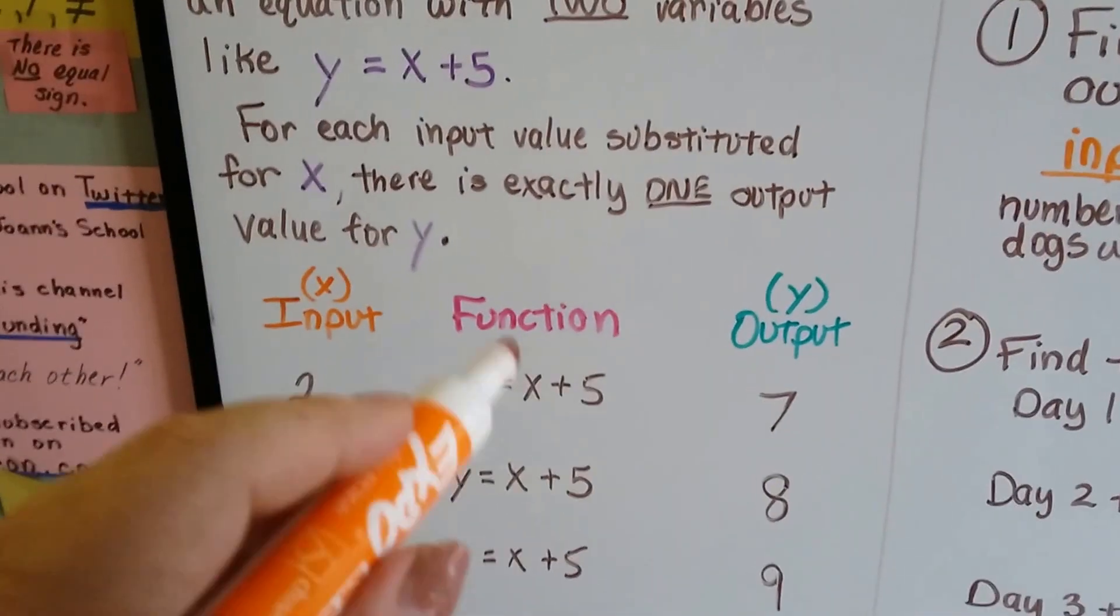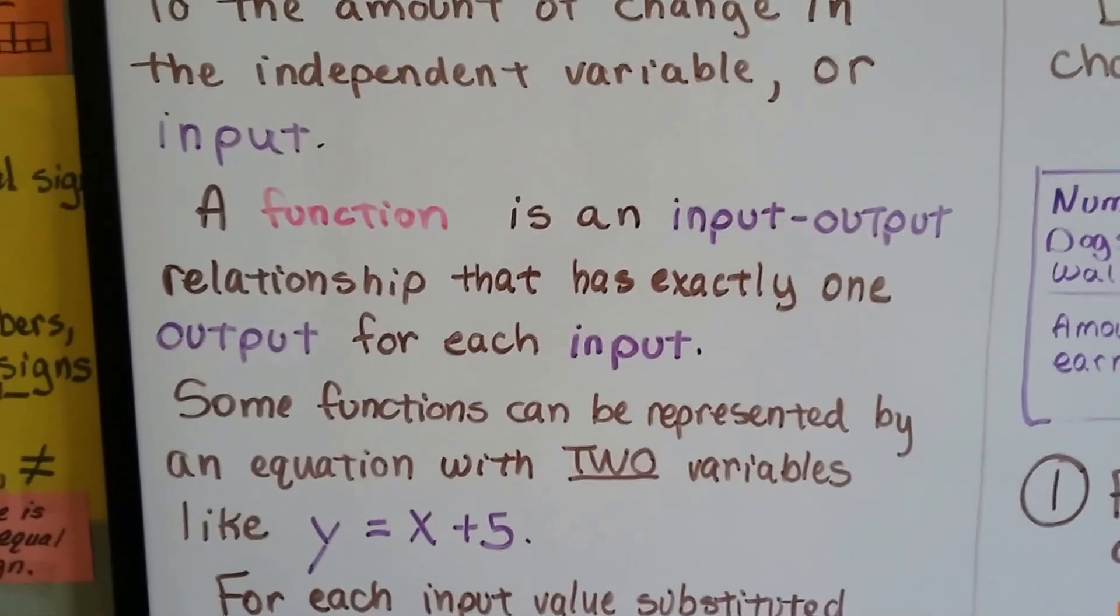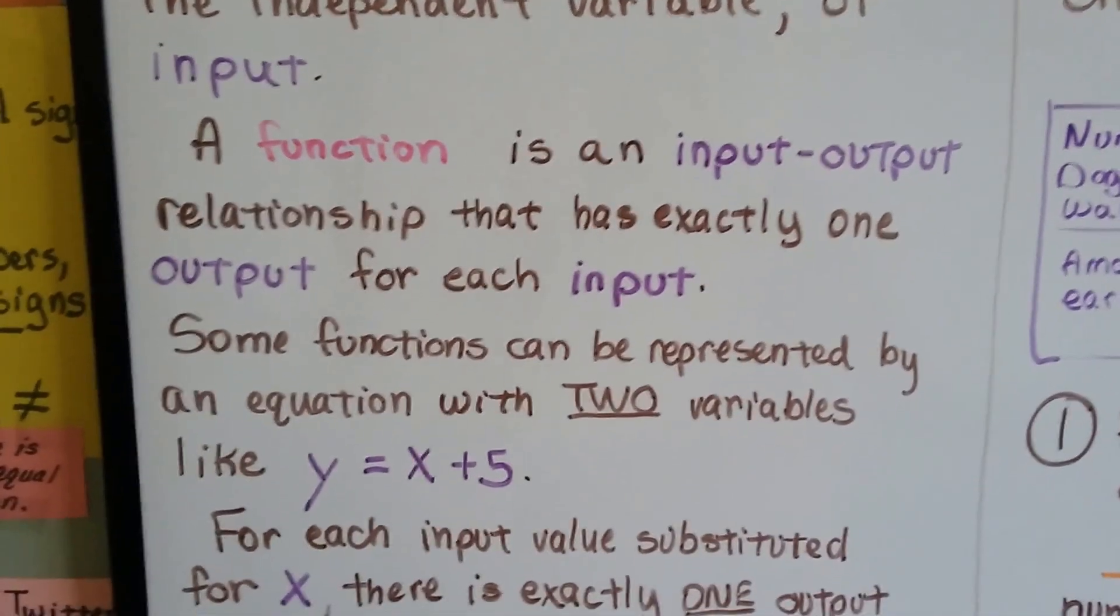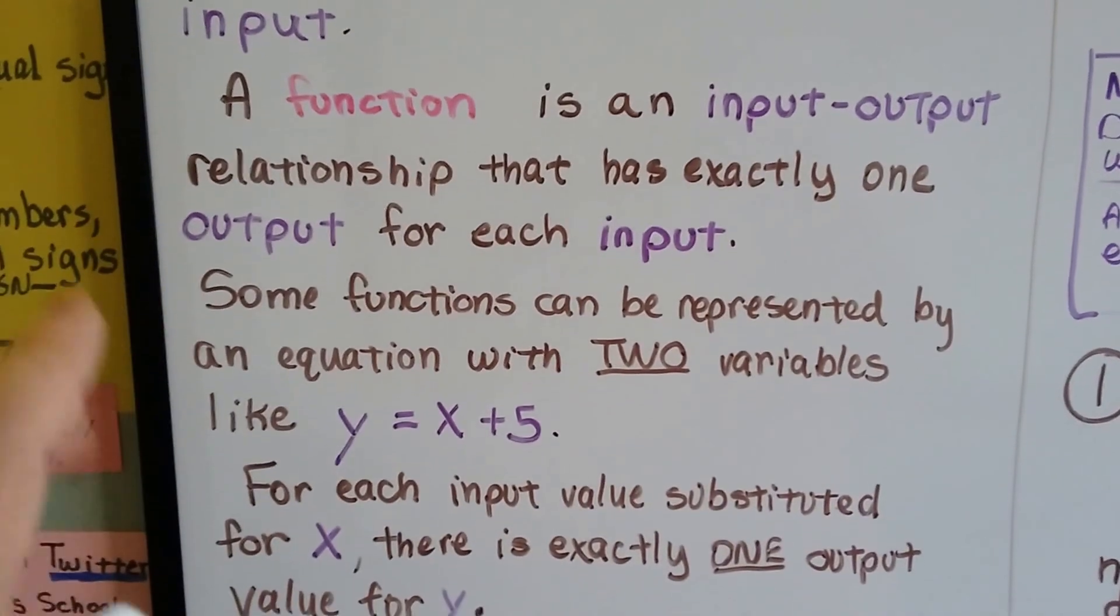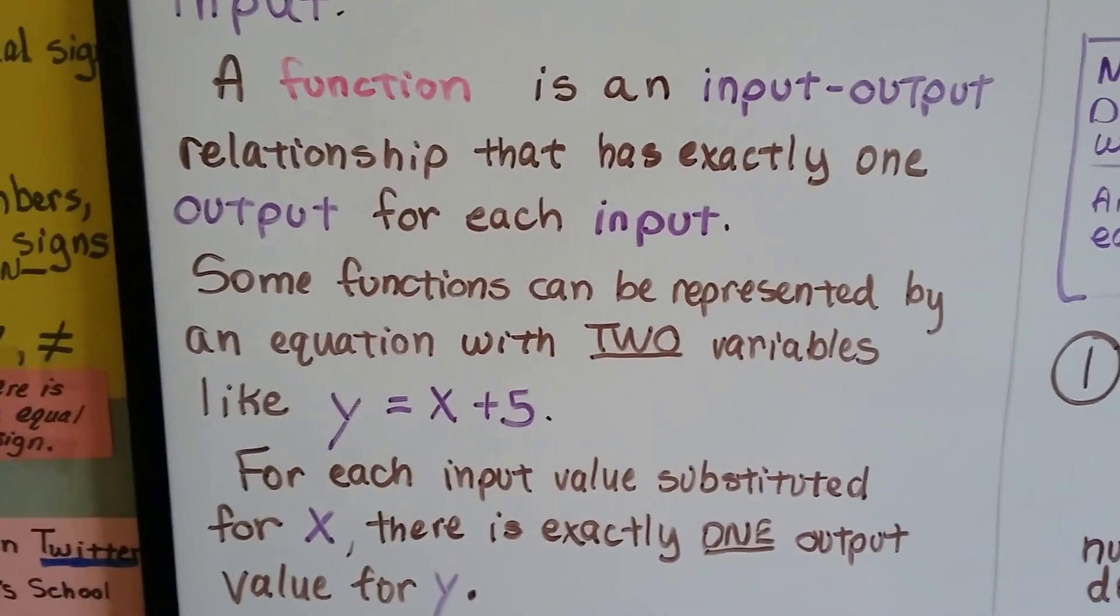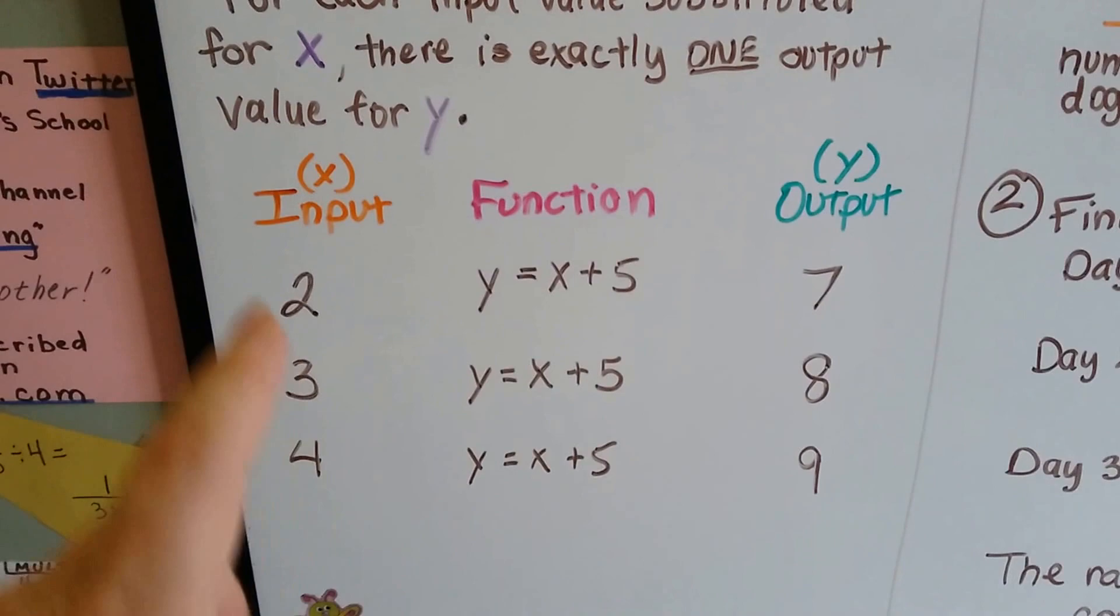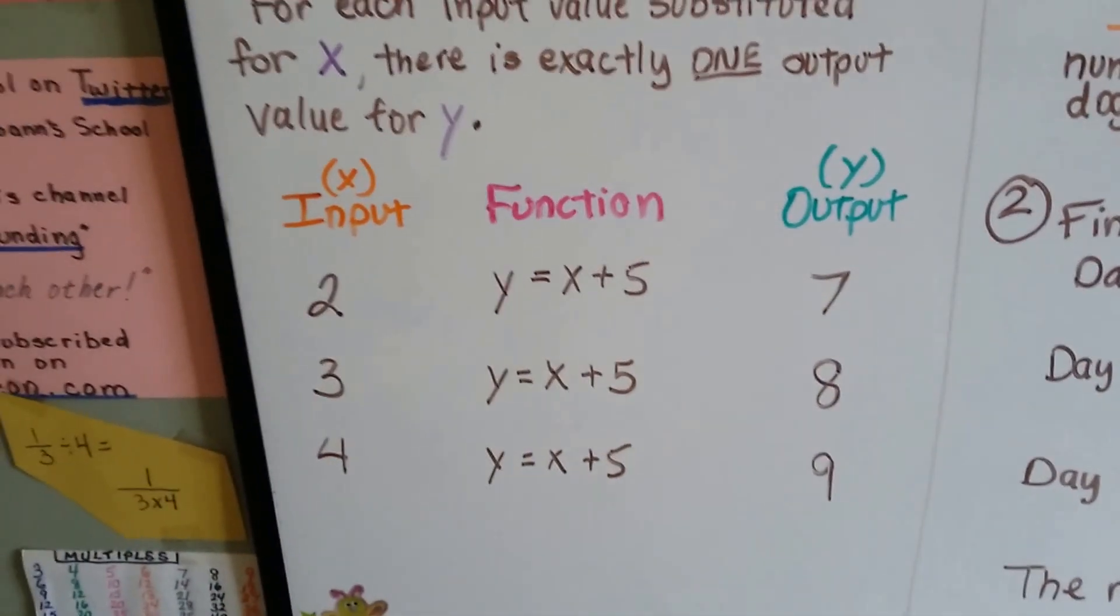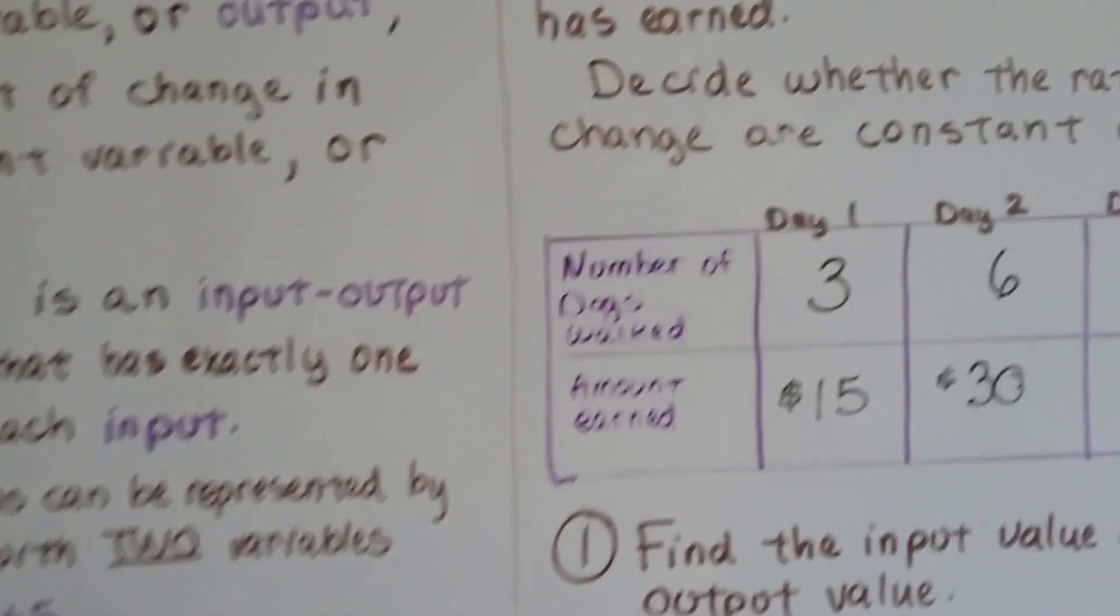This function, y equals x plus 5, is an input-output relationship that has exactly one output for each input. Now that makes sense. If I put the number 2 in here, our output is going to be 7. Alright, so let's take a look at this.